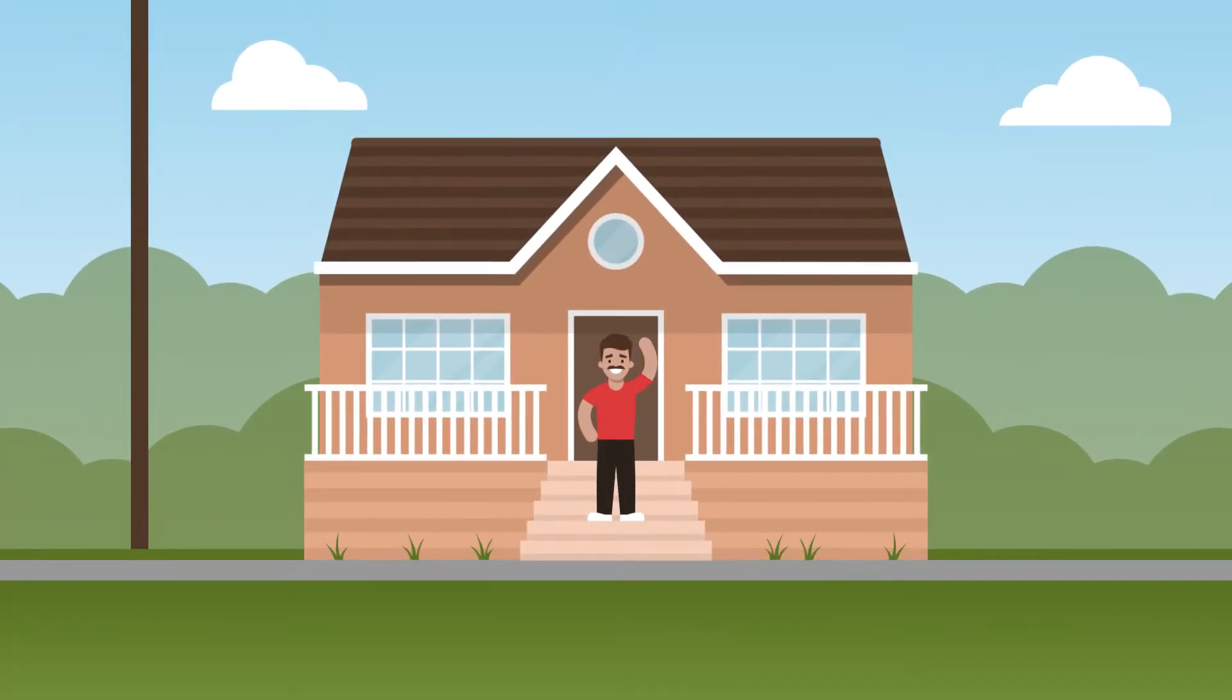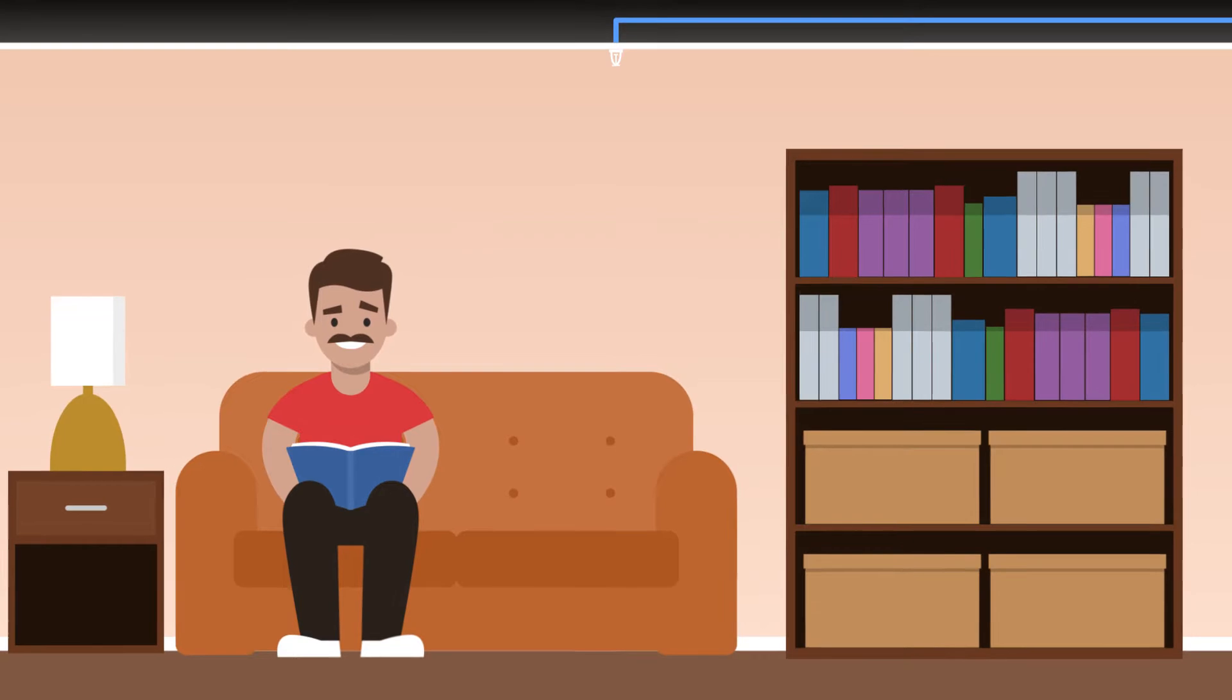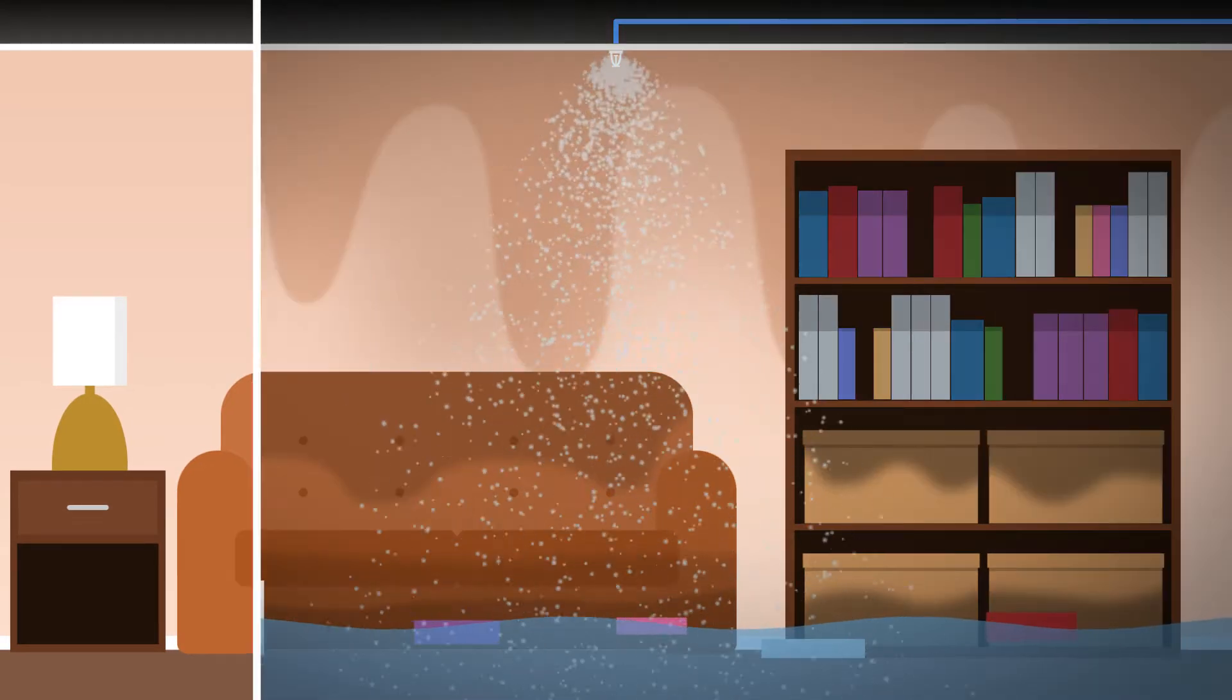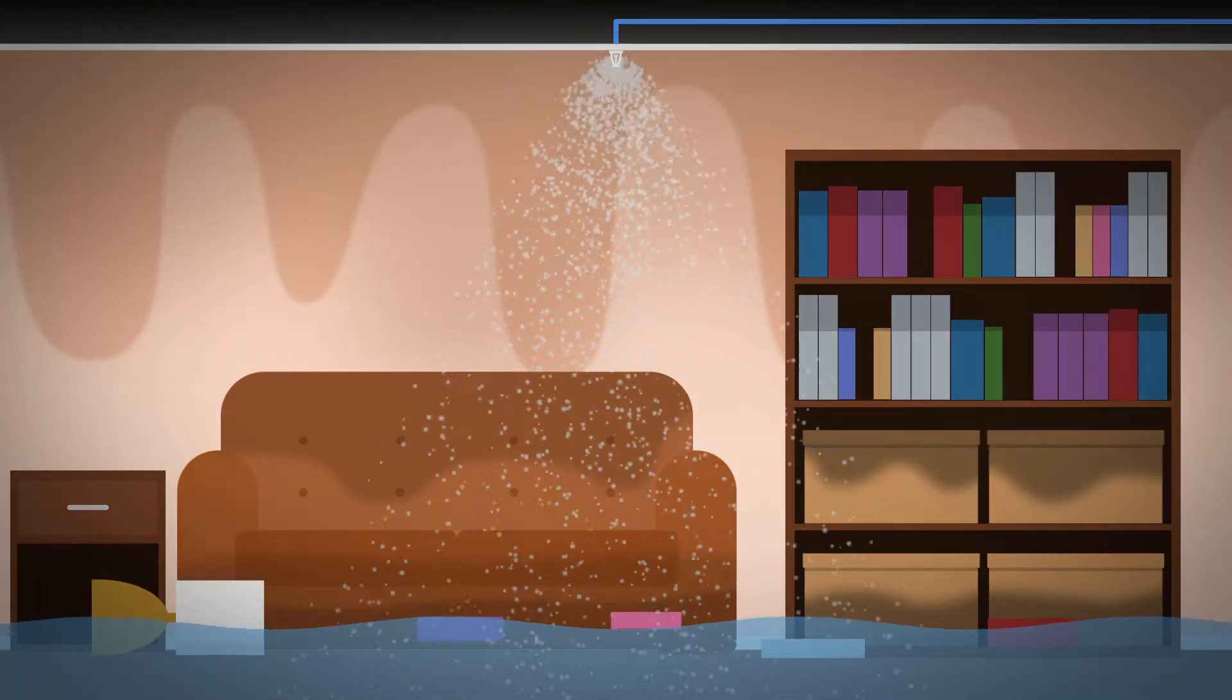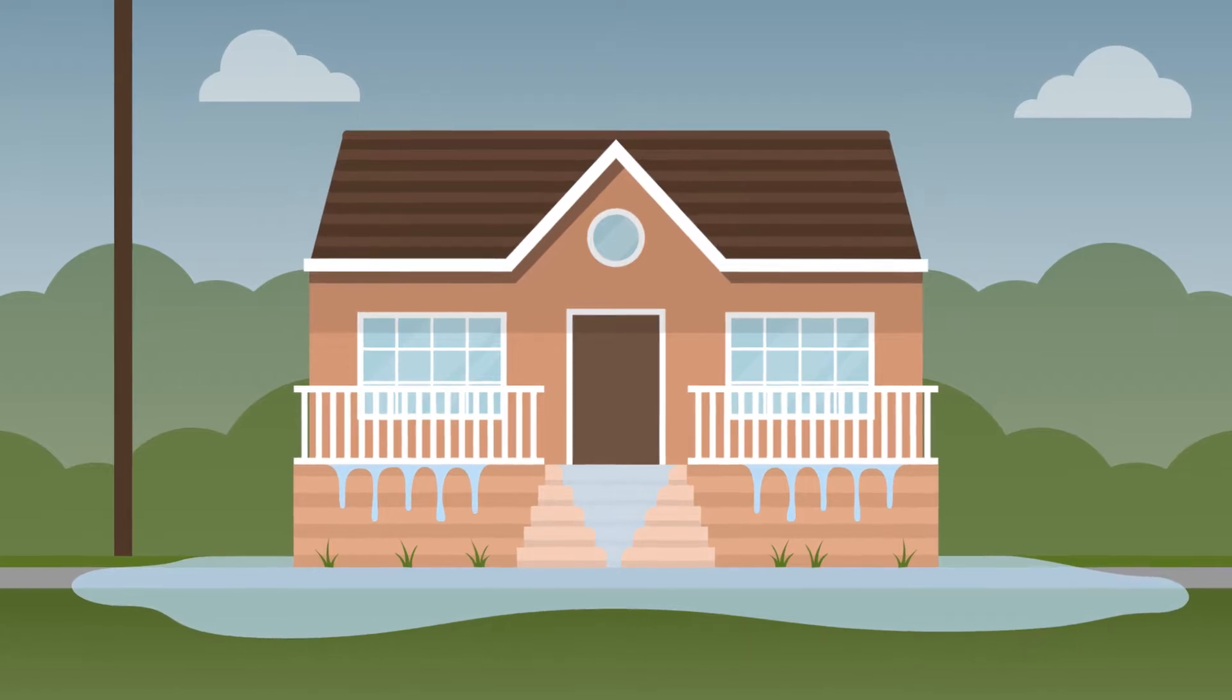Residential sprinkler systems are an excellent way to protect you and your property from fire. However, potential leaks or unwanted discharges of water can cause devastating damage if not controlled correctly.